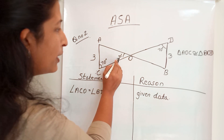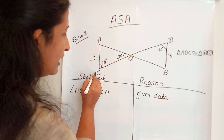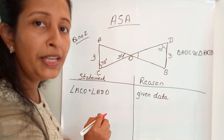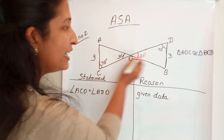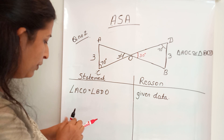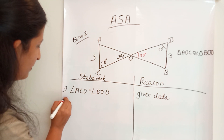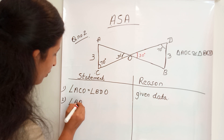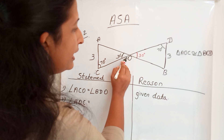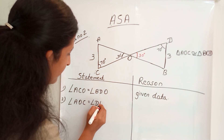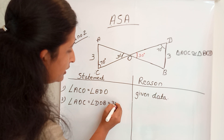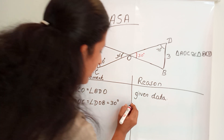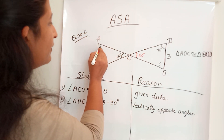Statement 2: angle AOC is equal to angle DOB, which equals 30 degrees. Angle AOC is 30 degrees; what about the other angle? It will also be 30 degrees. The reason is: vertically opposite angles are equal.